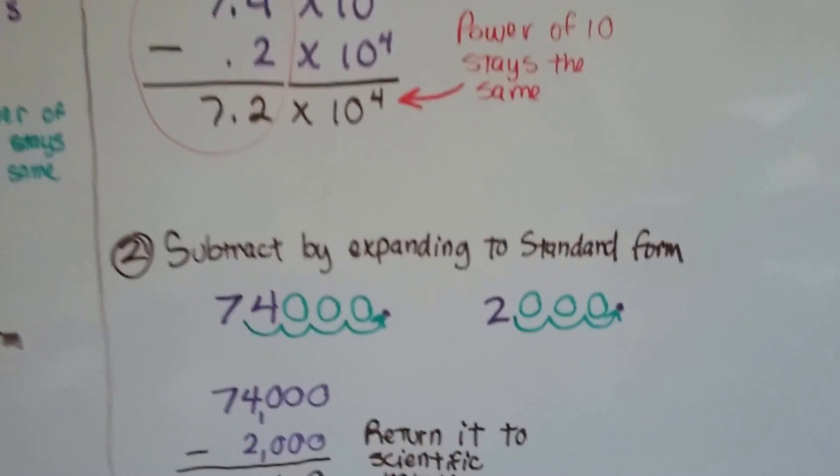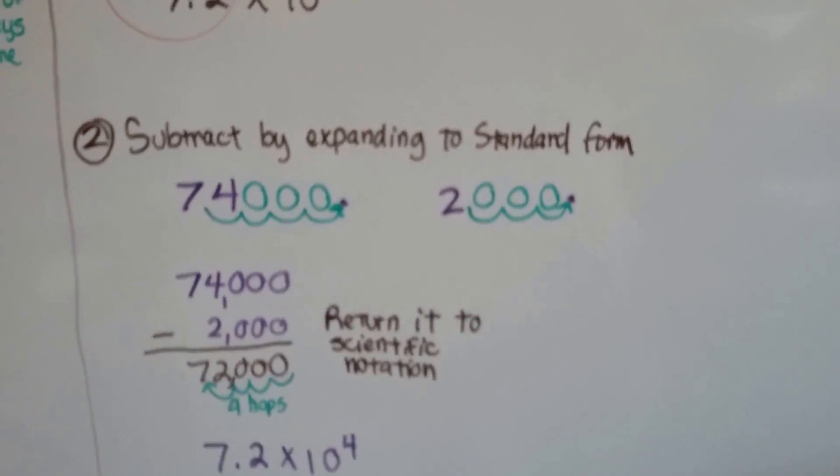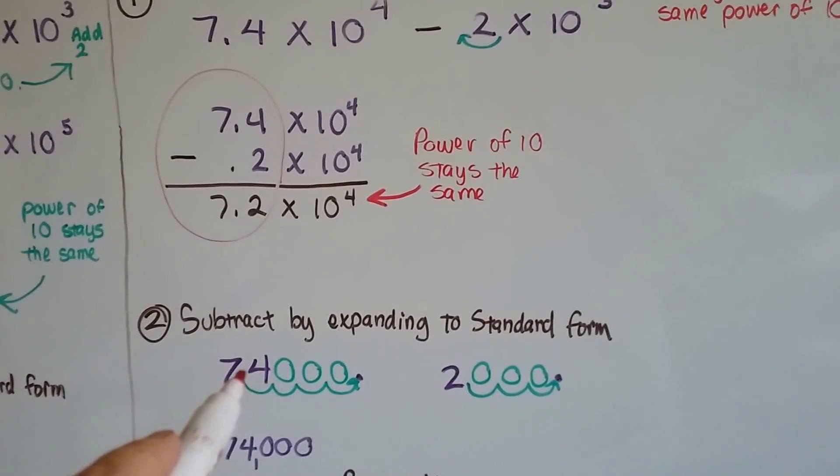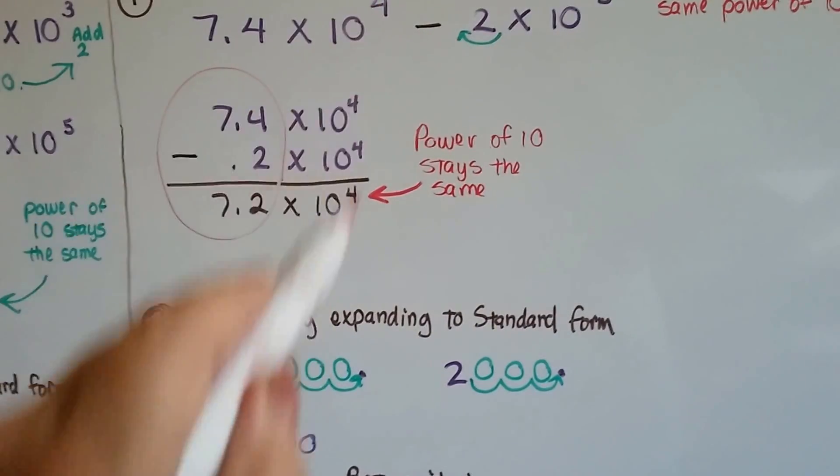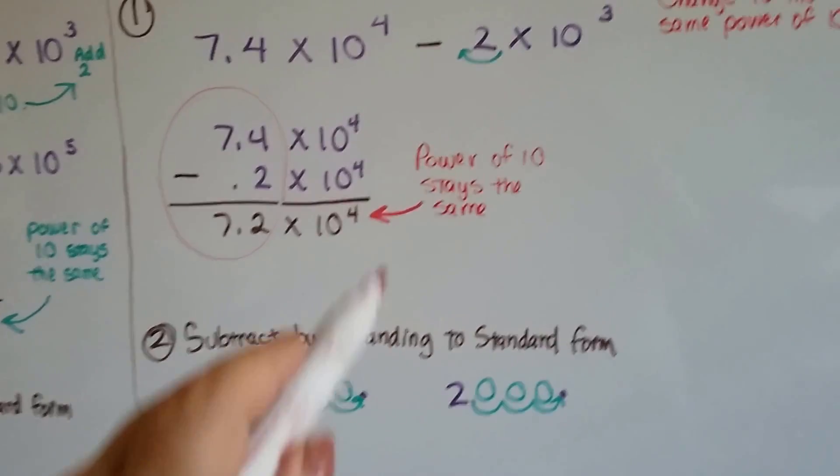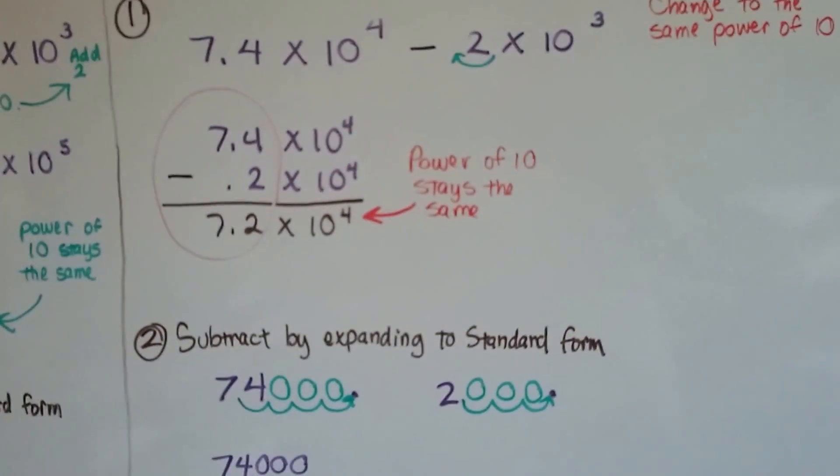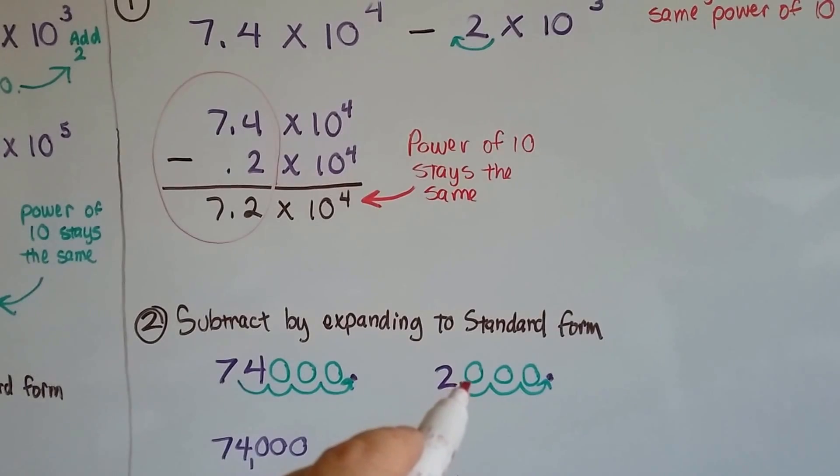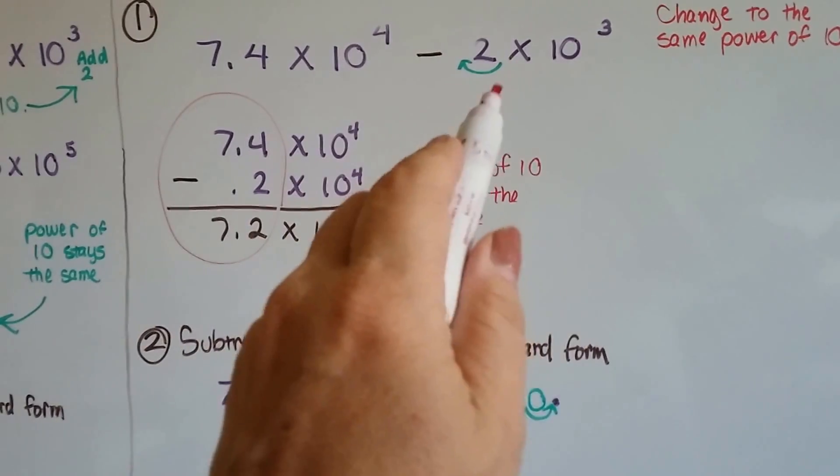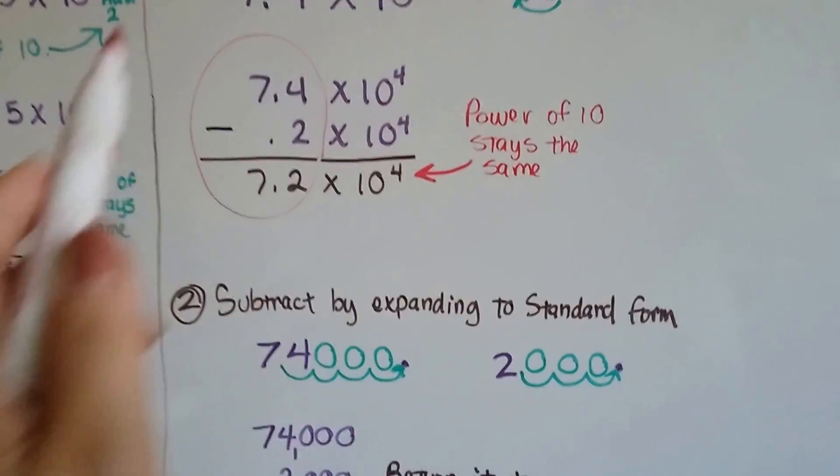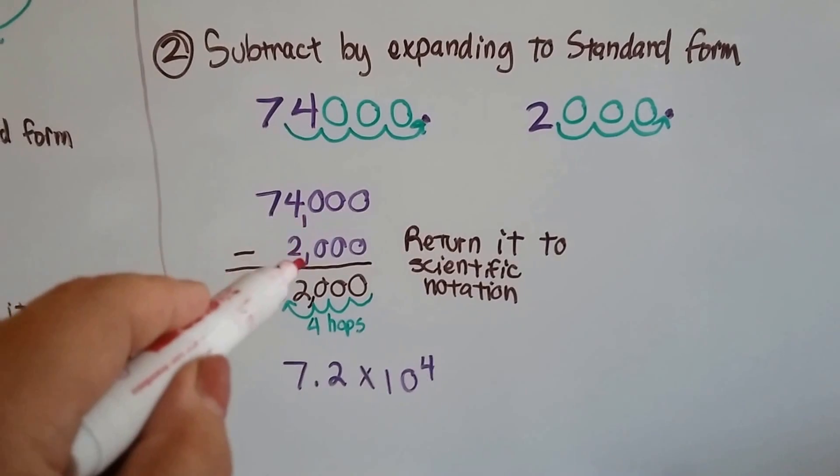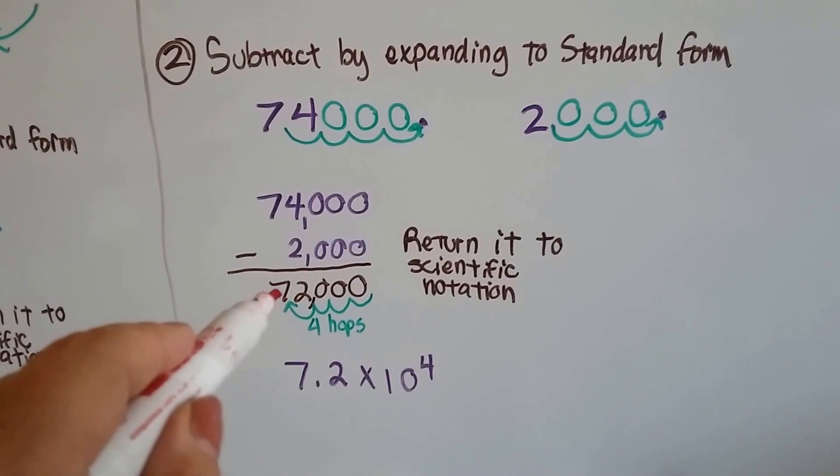And just like with addition, we can do it by expanding it to standard form. We've got 7.4 times 10 to the 4th power, so we're going to move that decimal point from between the 7 and the 4, four hops—that's what the exponent tells us to—1, 2, 3, 4. Put in some zero placeholders and we've got 74,000. Now we've got 2 times 10 to the 3rd power. So we take our 2, the decimal point's behind it, and we move 1, 2, 3 hops, so we've got 2,000. We didn't have to change any powers because we're just writing it in standard form. So now we've got 74,000 take away 2,000. 4 minus 2 is 2, we drop the 7, we've got 72,000.